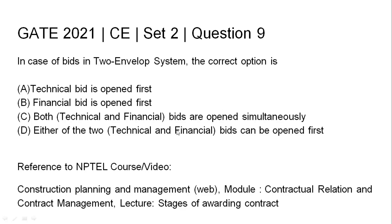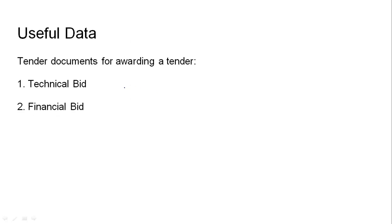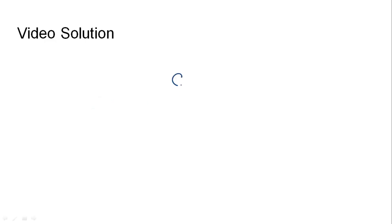The relevant NPTEL reference has been provided. During awarding a contract, a contractor is supposed to submit certain documents. These documents are generally classified into two categories: the first category is the technical bid and the second category is the financial bid.